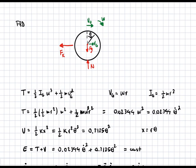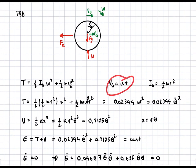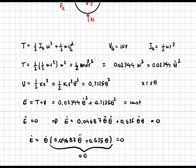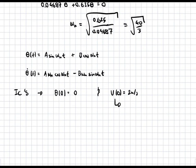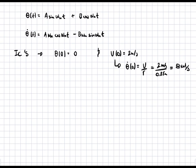Since V equals omega times R, we can say theta-dot(0) equals V over R. So theta-dot(0) equals 2 meters per second divided by 0.25 meters, which equals 8 radians per second. Those are our two initial conditions.